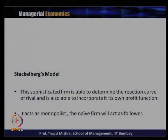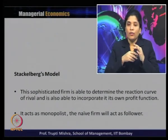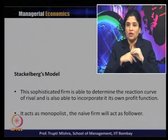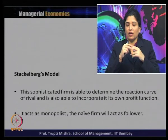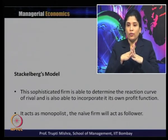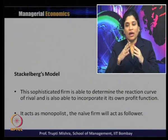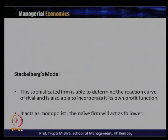This sophisticated firm, when they recognize what will be the rival's plan or what is the reaction curve of the rival, they are also able to incorporate that in their own profit function because they now know the reaction curve function of the rival. They act as a monopolist, and the naive firm will act as a follower.